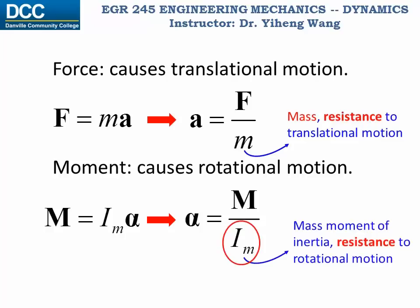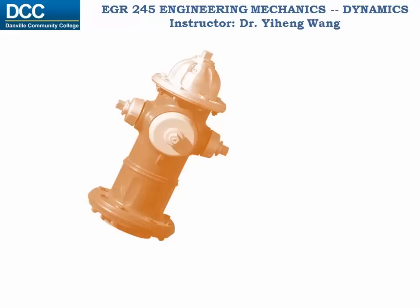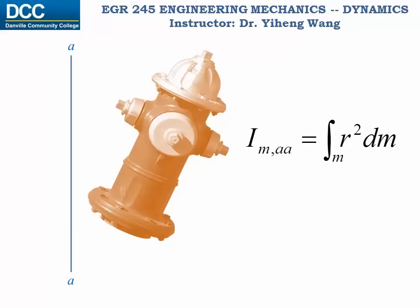For a given rigid body, we can calculate its mass moment of inertia about any arbitrary axis, defined as I_aa equals the integration of r squared dm, where dm is the mass of a differential element and r is the perpendicular distance from this differential element to the axis. Since in this course we normally refer only to the mass moment of inertia, from now on I'm going to drop the subscript m.